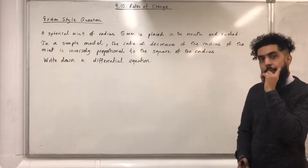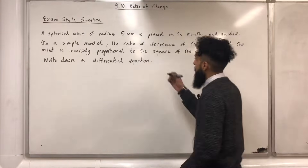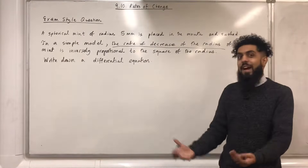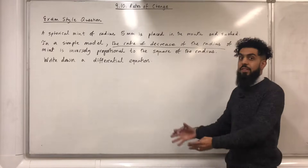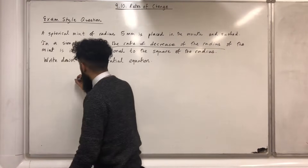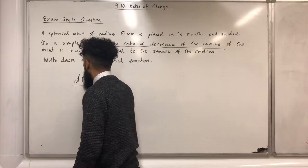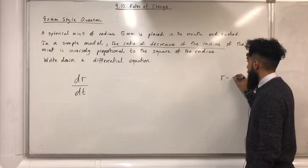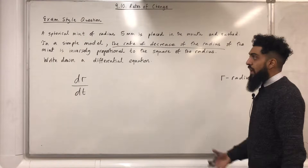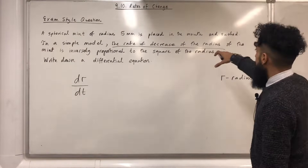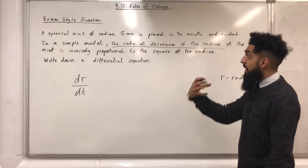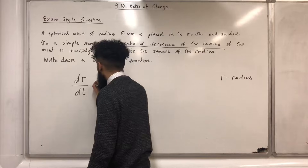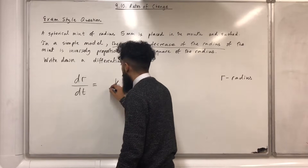The key part of this question is the rate of decrease of the radius. That is a differential, and the differential I can write is dr over dt, where r represents the radius. We are told the rate of decrease of the radius is inversely proportional to the square of the radius, so I can write dr over dt is equal to k over r squared.